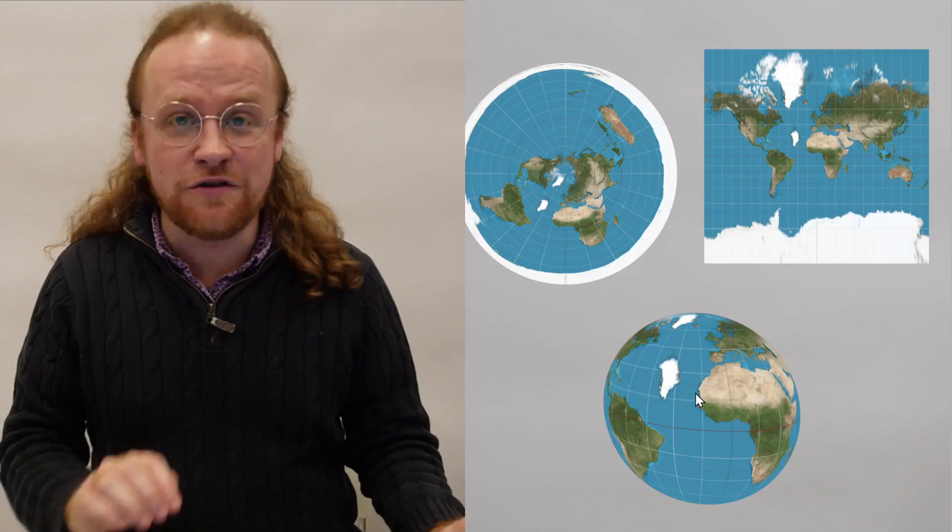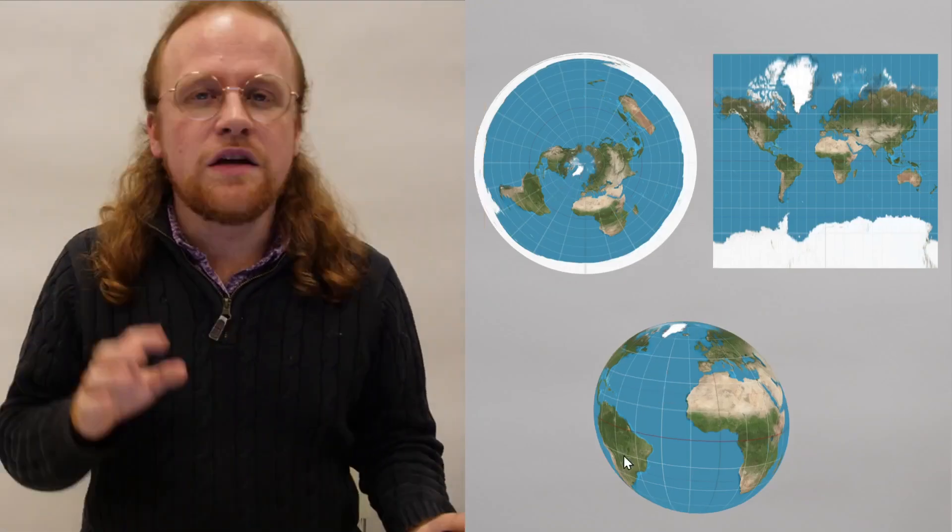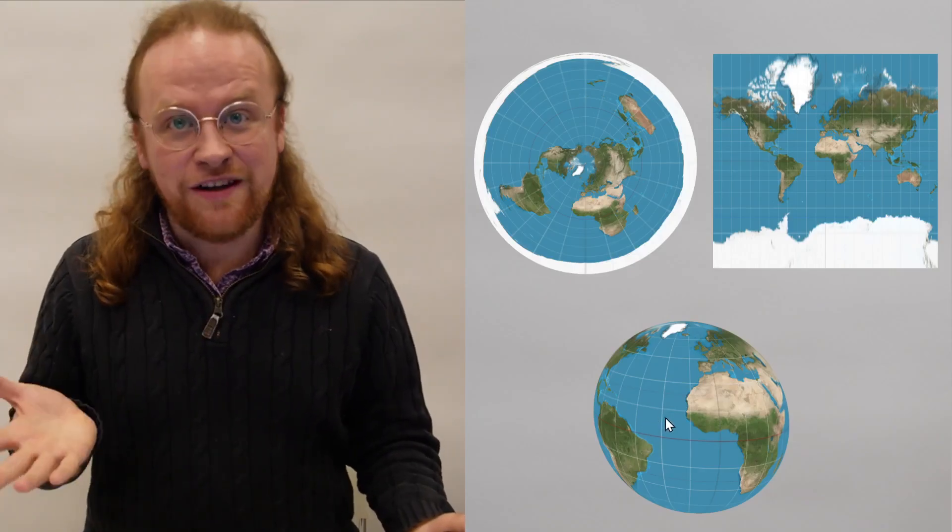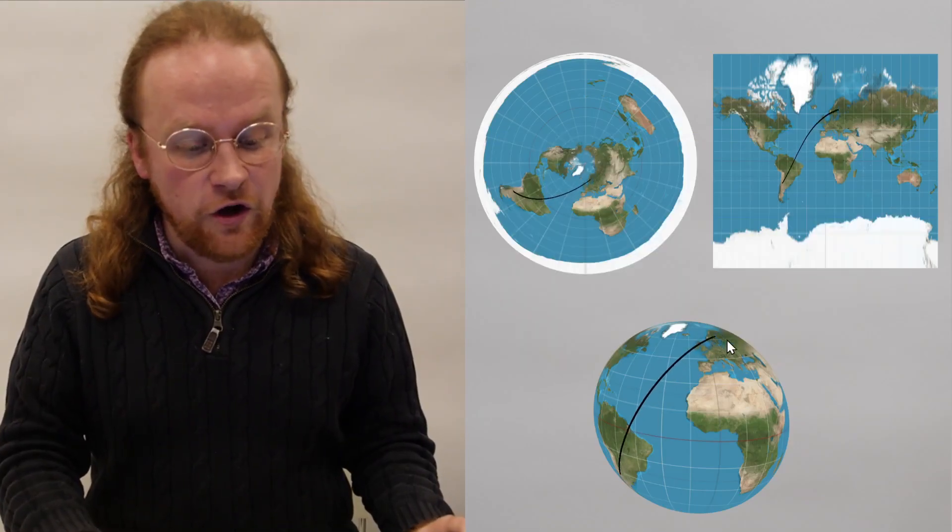This map still has a lot of problems. Let me show you what I mean. Suppose you wanted to fly from one country to another and you want to get there as quickly and as fuel efficiently as possible, maybe with a refueling halfway.